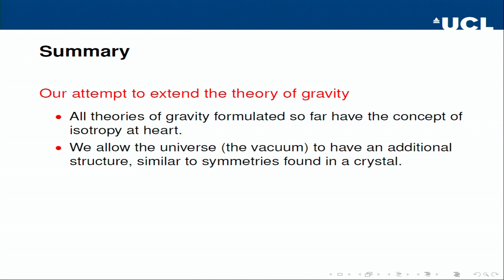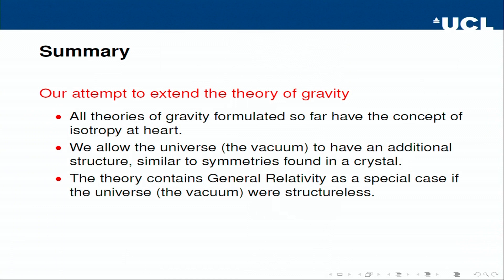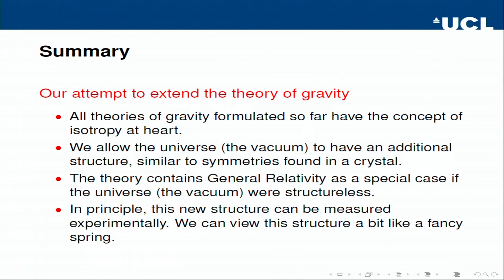In the theory we have written down, we can in principle hand it to experimental colleagues. They can measure the parameters. Worst case: they measure all parameters to be one, and our structure reduces to Einstein — somewhat disappointing, but it can be done. So we can measure all the additional structure we put onto the theory and put it to the test. The theory contains general relativity as a special case.